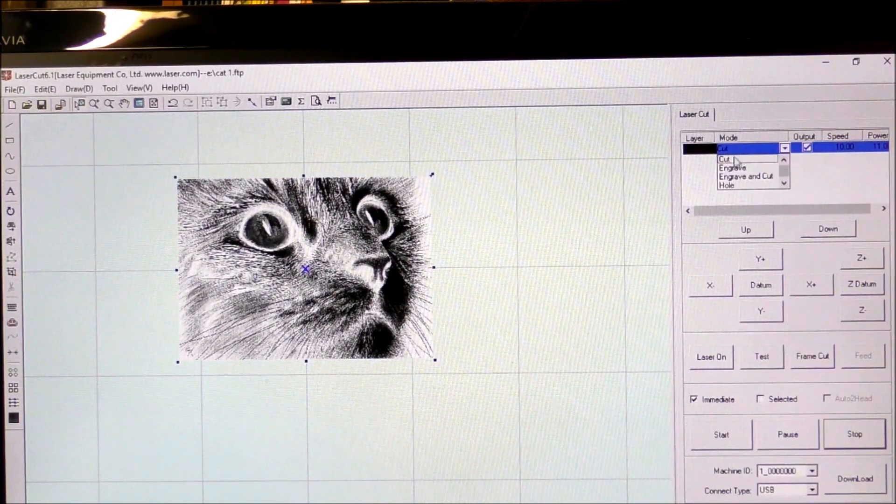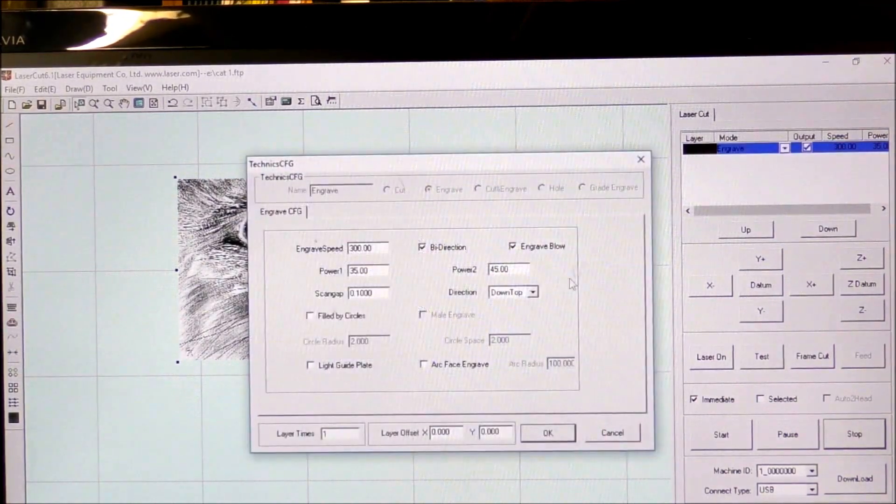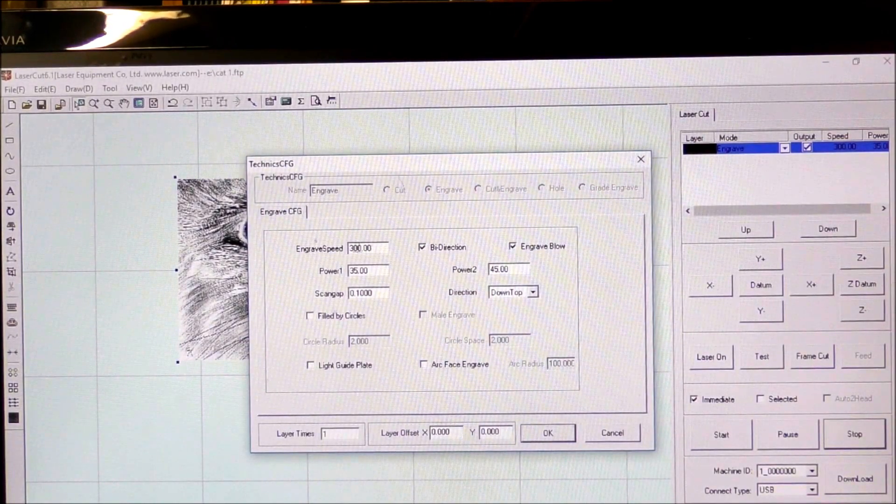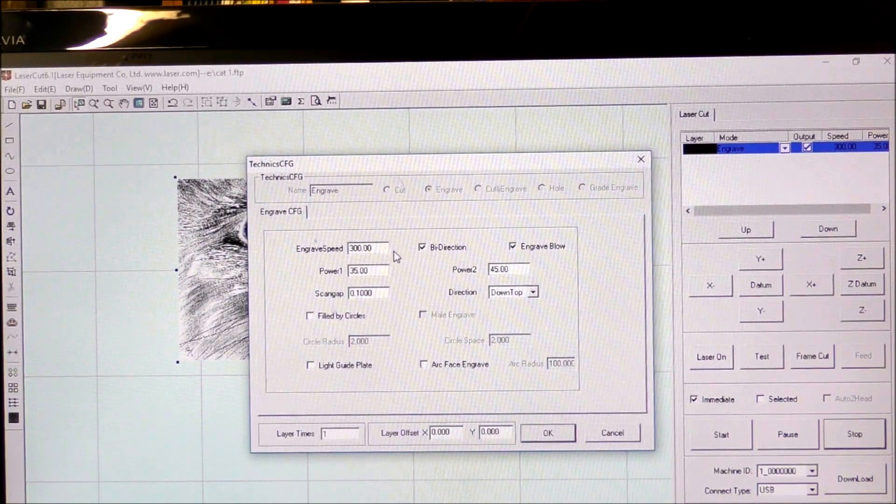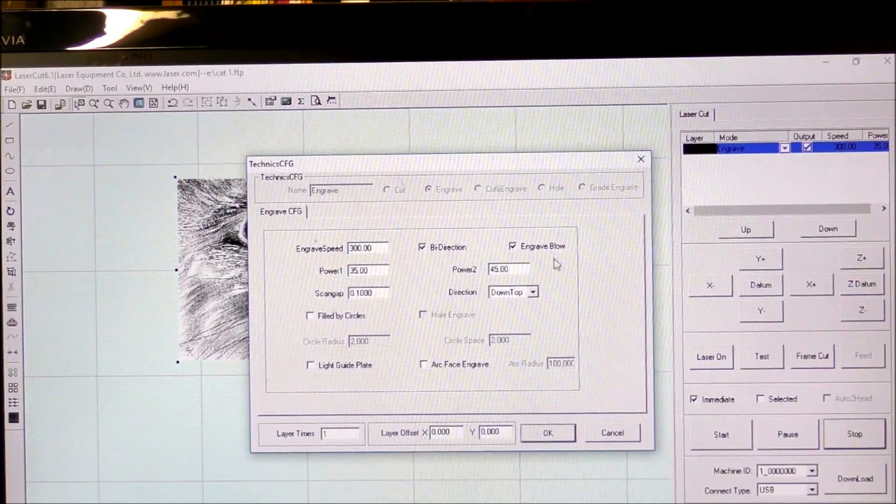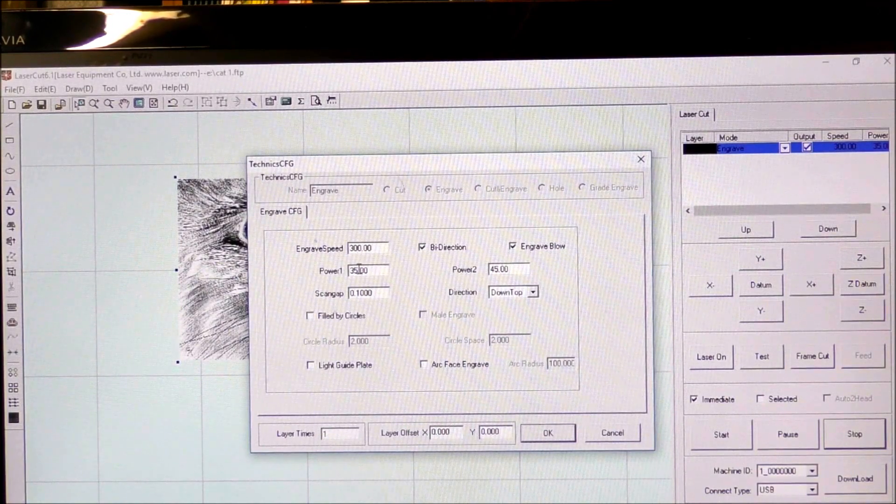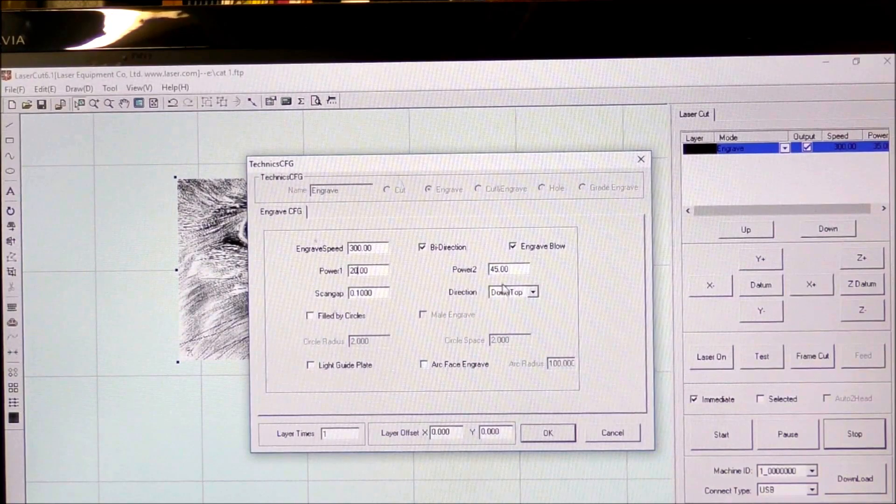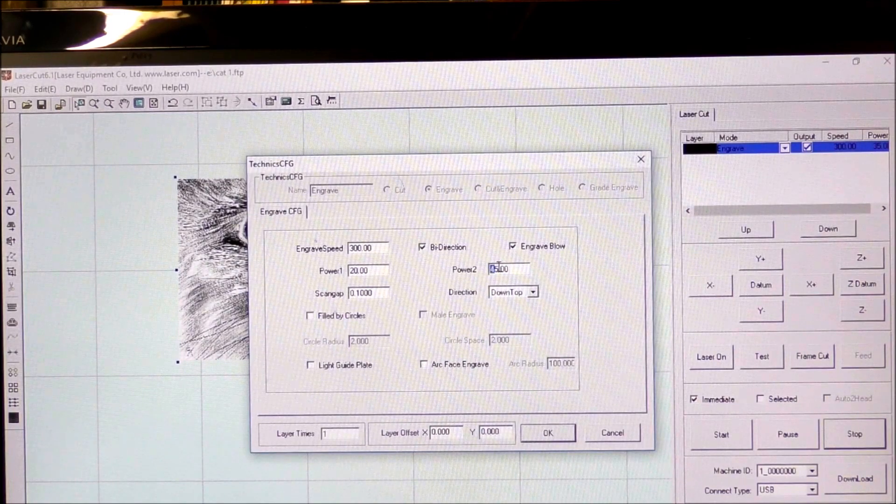Click once, say engrave. We only want to engrave this. So then double click, this will come up. Okay, so 300 is fine, that's 300 millimeters per second which is actually about 11 inches per second. Bi-direction correct, so we want it to fire both directions. Engrave blowing yes, that's ticked. Now this is a little high because we want to be fairly gentle with this, so we're going to say 20 power, and I'm going to knock this down to about 22.